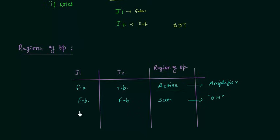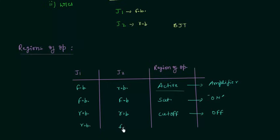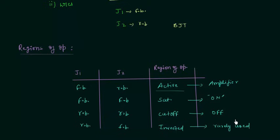When junction J1 is reverse biased and junction J2 is also reverse biased, the transistor is in the cutoff region, corresponding to logical OFF or open circuit. In the fourth case, the transistor is in the inverted mode — emitter and collector switch their roles. This mode of operation is rarely used.